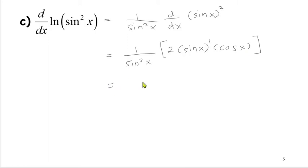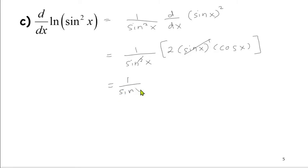We can simplify the expression by canceling the common factor. We cancel sin x with sin x, leaving 1/sin x times cos x, which equals cos x / sin x, i.e., cot x.